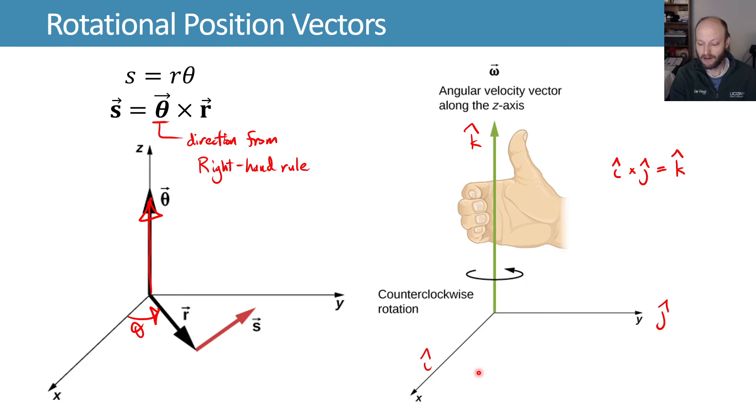Similarly, I can start in the j-hat direction and curl towards k-hat, and I'll end up with i-hat. And to round things out, if we start in k-hat and curl towards i-hat, we end up with j-hat. So that's the right-hand rule. Whichever way makes sense to you, I think it's very important to be able to have an idea of what direction we're talking about when we're talking about things that are rotating.